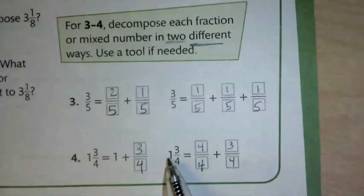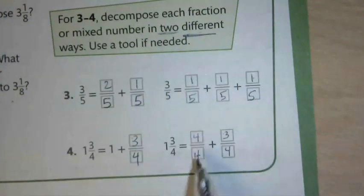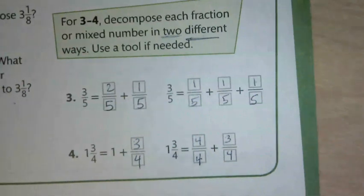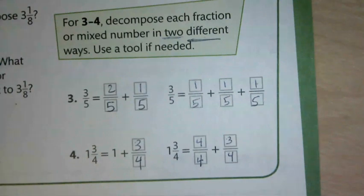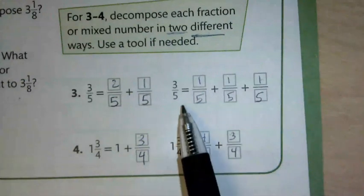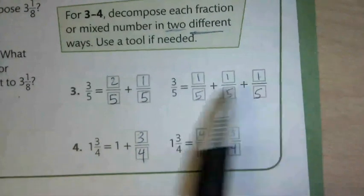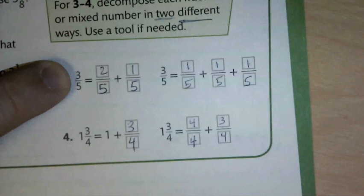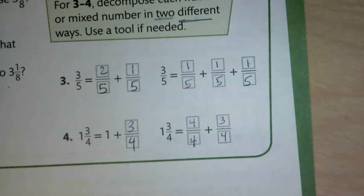That's all we've got for today. When decomposing a mixed number with a whole number, remember: the numerator and denominator must match to make one whole — so 4/4 equals 1, 2/2 equals 1, 3/3 equals 1. Then add the fraction on. When you've got just a fraction, you can break it into a variety of different smaller parts that add up to the original. Thanks for working hard with me today — have a great rest of the day. We'll see you next time, fourth grade!